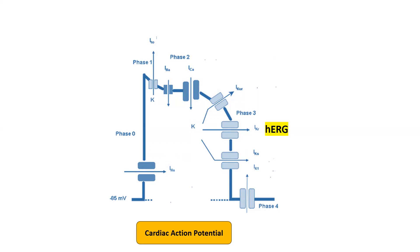This action potential involves the movement of ions into and out of the cardiac myocyte through voltage-gated channels. It happens in different phases as shown here: phase 0, phase 1, phase 2, phase 3, and phase 4.